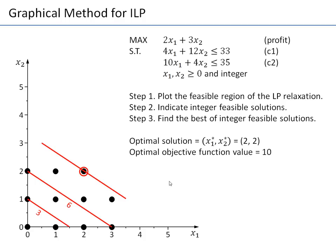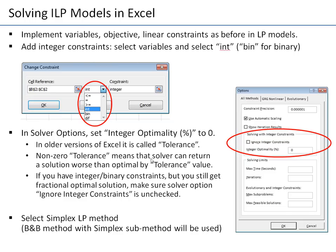To solve integer linear programming problems in Excel, you implement everything as before: reserve cells for variables, set up the objective function calculation, linear constraints with left-hand side and right-hand side values. The one new thing is that you must add integer constraints on the variables — select the variables and in the drop-down box choose 'int', or 'bin' for binary variables.